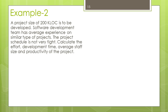Next example: a project size of 200 KLOC is to be developed. The software development team has average experience on similar types of projects, and the project schedule is not very tight. Calculate the effort, development time, average staff size, and productivity of the project. To solve this, we first choose the most appropriate mode. The mention of average experience and a not-very-tight schedule indicates that semi-detached mode is the most appropriate mode for this problem.